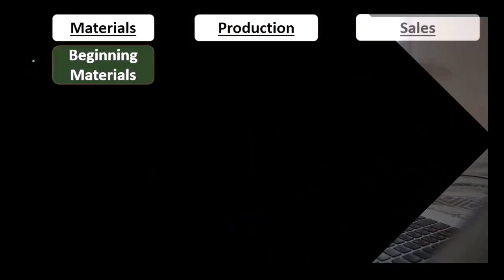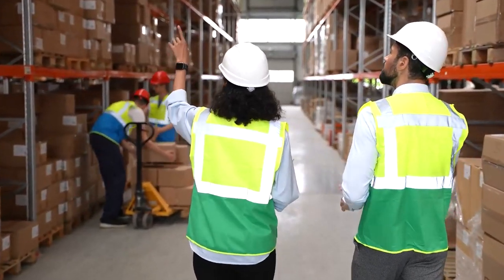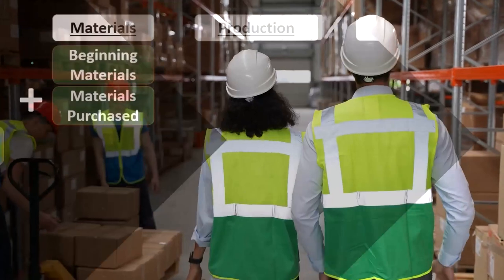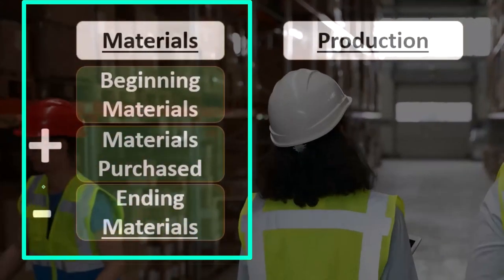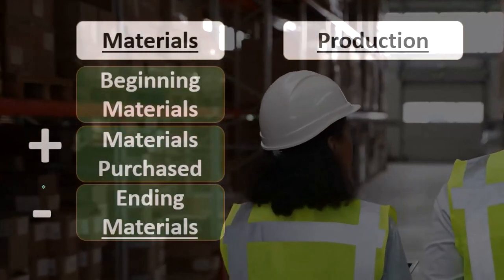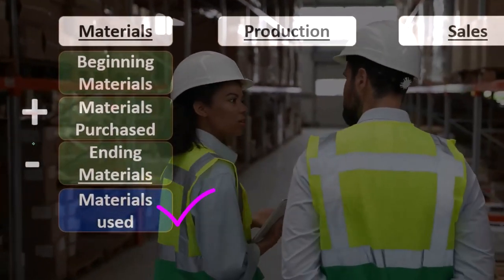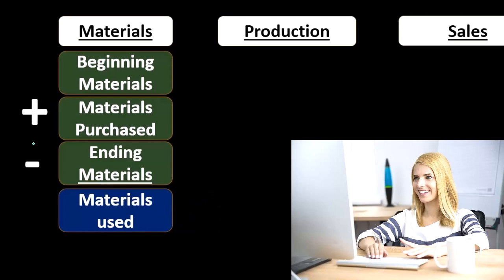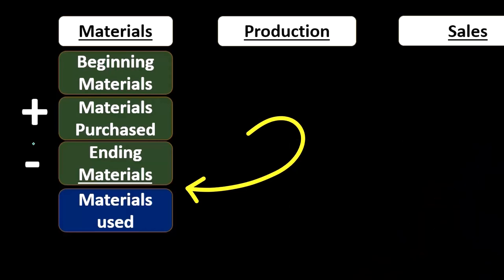First, we have materials, which run through a similar process as when we buy and sell inventory in a merchandising company. We start with materials already in the warehouse — beginning materials from last month still there this month — then add purchases, and subtract ending materials to give us materials used. This calculation should look familiar, as it's the same kind of calculation used for cost of goods sold for both a merchandising company and a manufacturer.